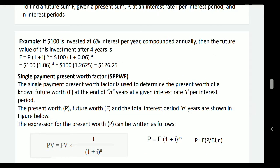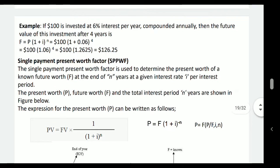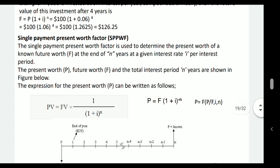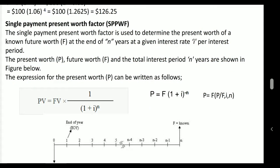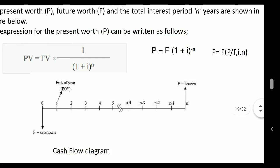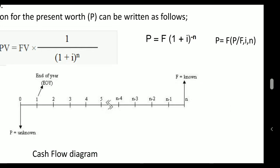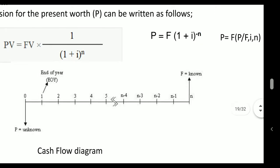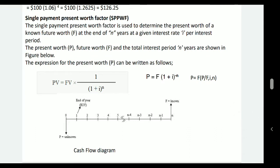For example: $100 is invested at 6% interest per year compounded annually. The future value after 4 years = 100 × (1.06)^4 = $126.25. This is the single payment factor — relationship between P and F. Then, single payment present worth factor: you know the future amount required — how much do you have to invest now? P = F × (1/(1 + i)^n), notated as P = F × (P/F, i, n). This is the inverse of the earlier calculation. Example: A company expects to receive $5,000 four years from now; current market interest rate is 10% compounded annually. P = 3,415. To get $5,000 in the future after 4 years, the present value is $3,415.